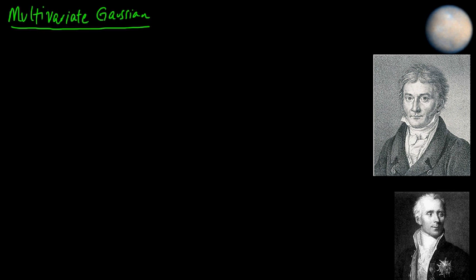The multivariate Gaussian is without a doubt the most important probability distribution in all of statistics and probability — or sometimes we just call it the Gaussian. It's named after Gauss, Carl Friedrich Gauss, a giant of mathematics in the late 1700s. He lived from 1777 to 1855, and he was highly influential in pure and applied math. He formulated the Gaussian distribution.